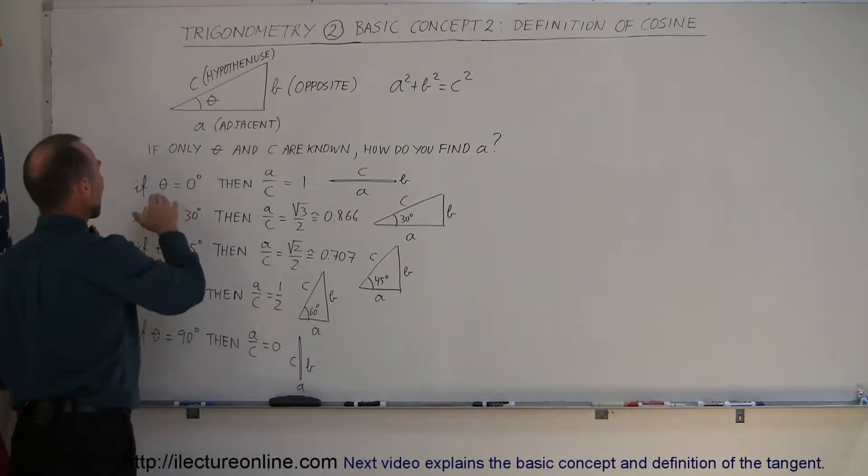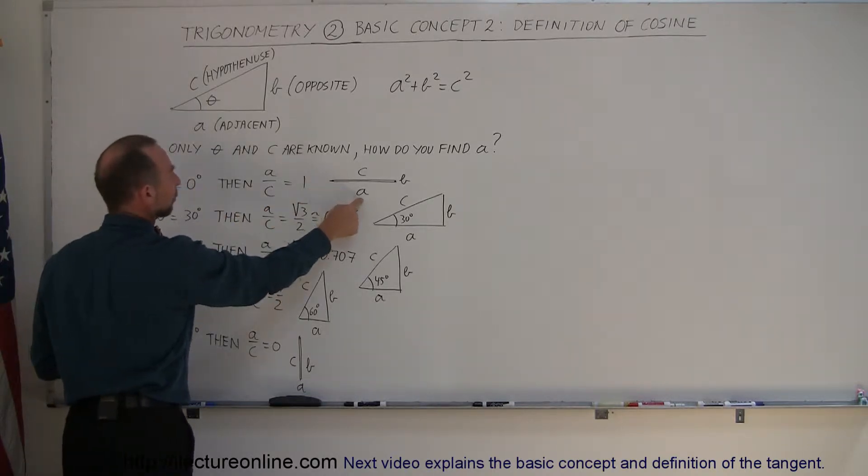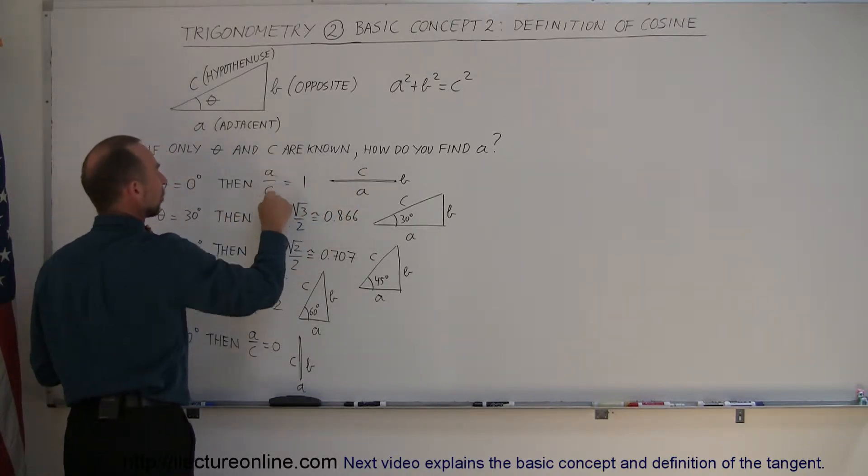And of course, we can say that if the angle is zero degrees, when it looks like this, then the adjacent side will be equal to the hypotenuse, and then the ratio is equal to one.